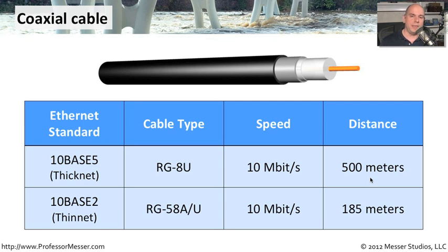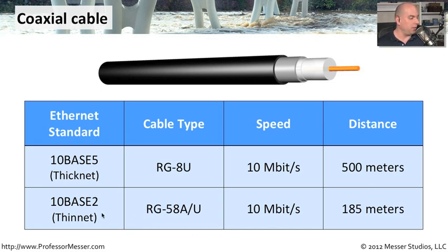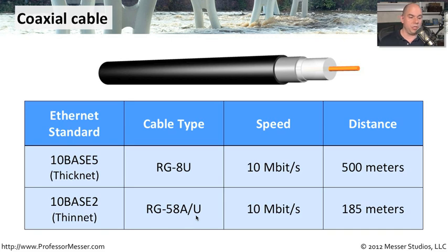It wasn't unusual to string thick net all the way through a building and simply connect devices as that cable wound its way around. However, thick net was very difficult to work with, so there was another type of coaxial cable called 10Base-2 — thin net. As the name implies, it was a thinner cable, the RG58A-U. It also ran at 10 megabits per second, with no difference in speed, but it did have a smaller distance.